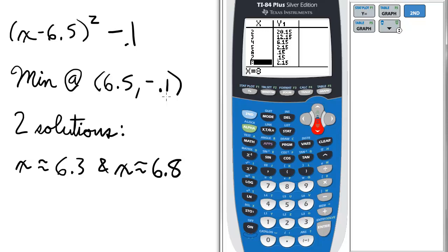And there are two solutions to the equation, where x is approximately 6.3 and x is approximately 6.8.